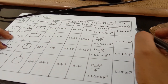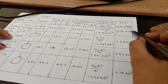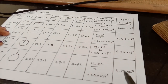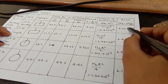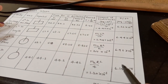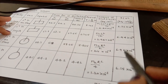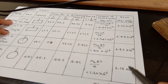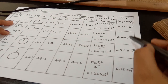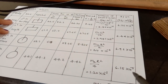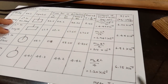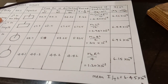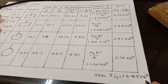Here we can observe that I/T² remains constant — irrespective of the body and the axis of suspension. Take the average of all four readings to find the mean I/T² value.